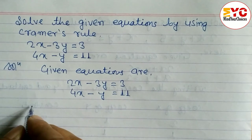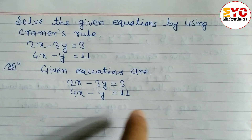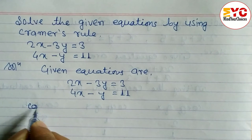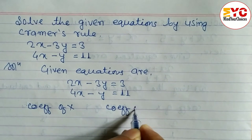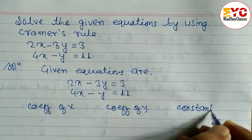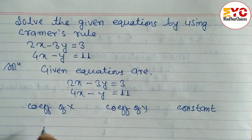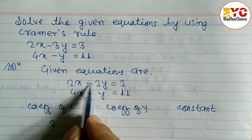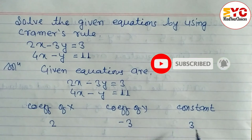We need to write down the coefficient of x, coefficient of y, and the constant number. The coefficient of x in the first equation is 2, the coefficient of y is minus 3, and the constant is 3.